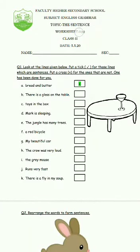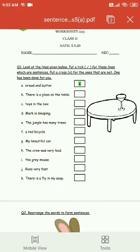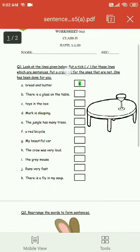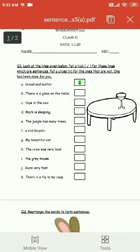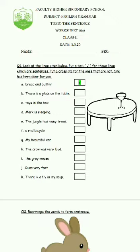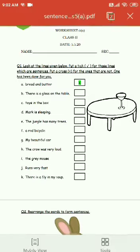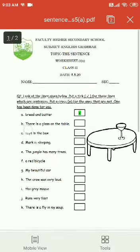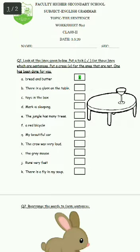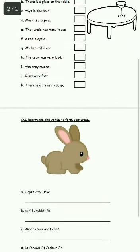Children, this is your worksheet number 5a. In question number one, you need to look at the lines given below and put a tick for those which are sentences and a cross for those which are not sentences. For example, 'bread and butter' — these words together are not making complete sense, so this is not a sentence. Hence we will cross it. Similarly, read the other lines and identify them accordingly.